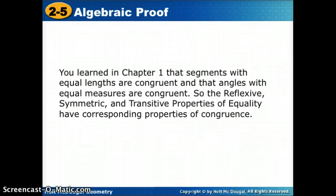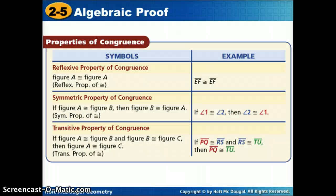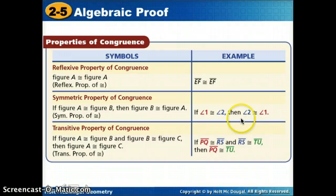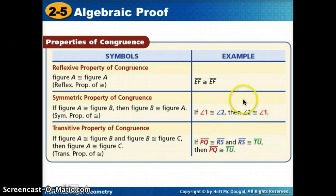All right. In Chapter 1, we learned that segments with equal measures are congruent, and that angles with equal measures are congruent. So our reflexive, symmetric, and transitive properties of equality, we also have those same properties when we're talking about congruence. So we call these congruence properties, but they're the exact same, but notice instead of the equal sign, we're going to use the congruent sign. And when we talk about segments, we put the bar back on, and when we talk about angles, we take the M off, and we just have the angle symbol.